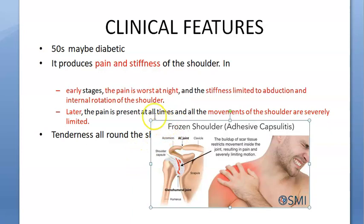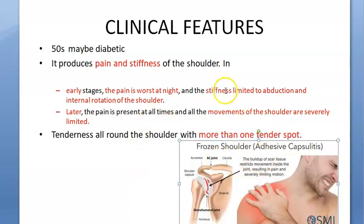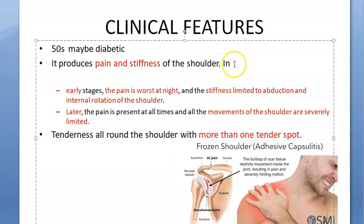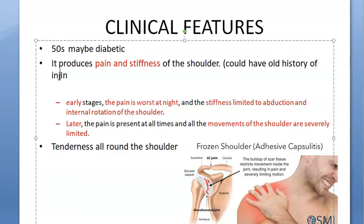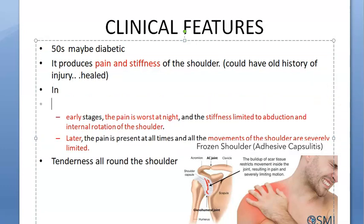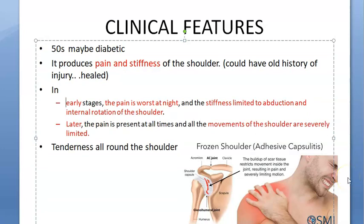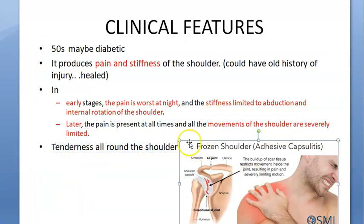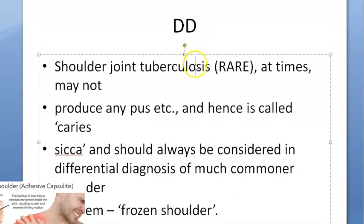To summarize the clinical features: a 50-year-old diabetic with pain and stiffness in the shoulder joint, possibly with an old history of trauma. In early stages, there is pain worse at night and stiffness limited to abduction and internal rotation. Later, pain is present at all times and shoulder movement is severely limited. On examination, tenderness is present at more than one spot.